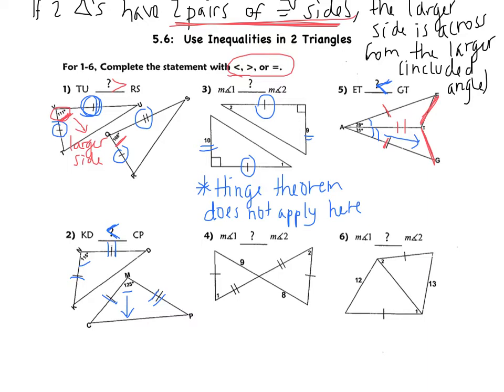Example four goes the other direction. This time we're given all the sides and we're looking at the angles. I have one pair of congruent sides, two pairs of congruent sides, but I don't have the angles. I have the third pair of sides: nine and eight. Nine is the bigger side, which means angle one is going to be the bigger angle, so angle one is greater than angle two. Pause the video and try example six on your own.